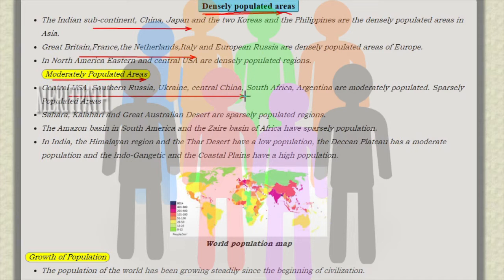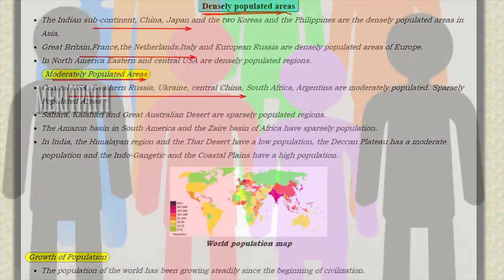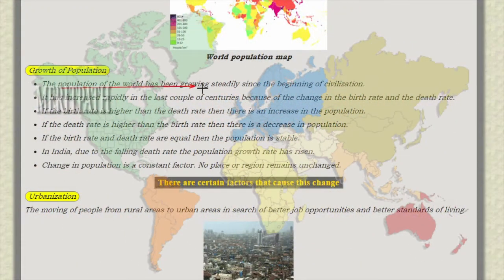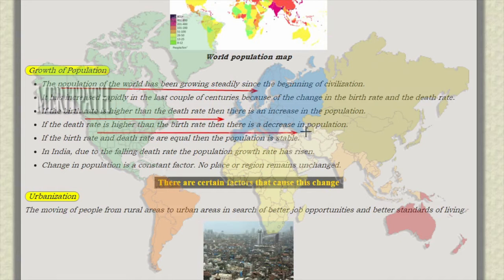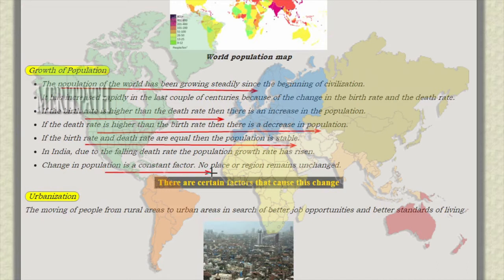Now coming to Growth of Population. The population of the world has been growing steadily since the beginning of civilization. If the birth rate is higher than the death rate, there is an increase in population. If the death rate is higher than the birth rate, then there is a decrease in population. If the birth rate and death rate are equal, then population is stable.